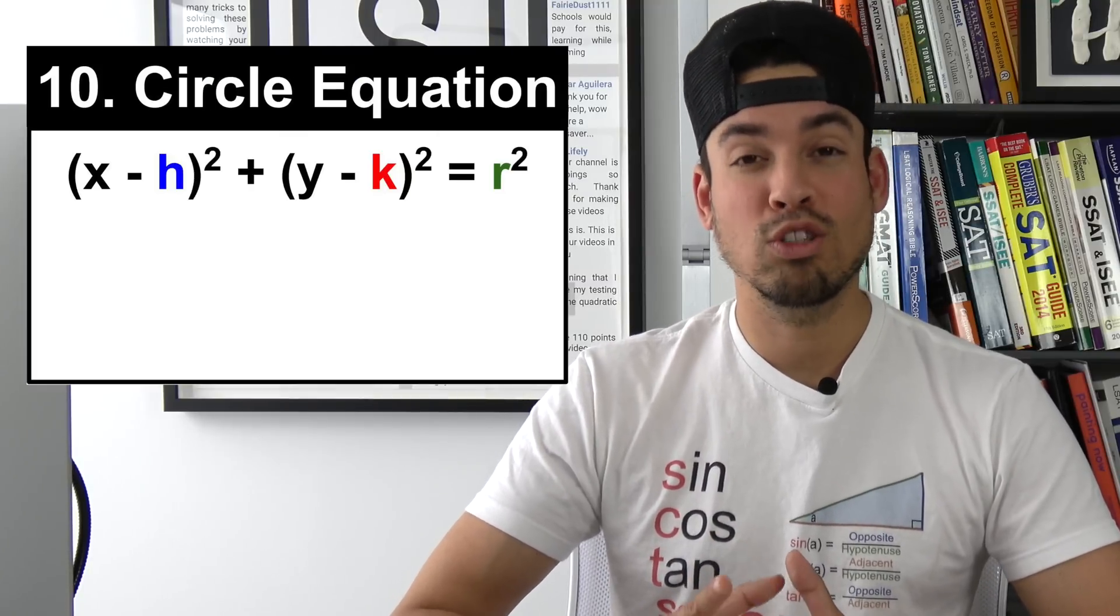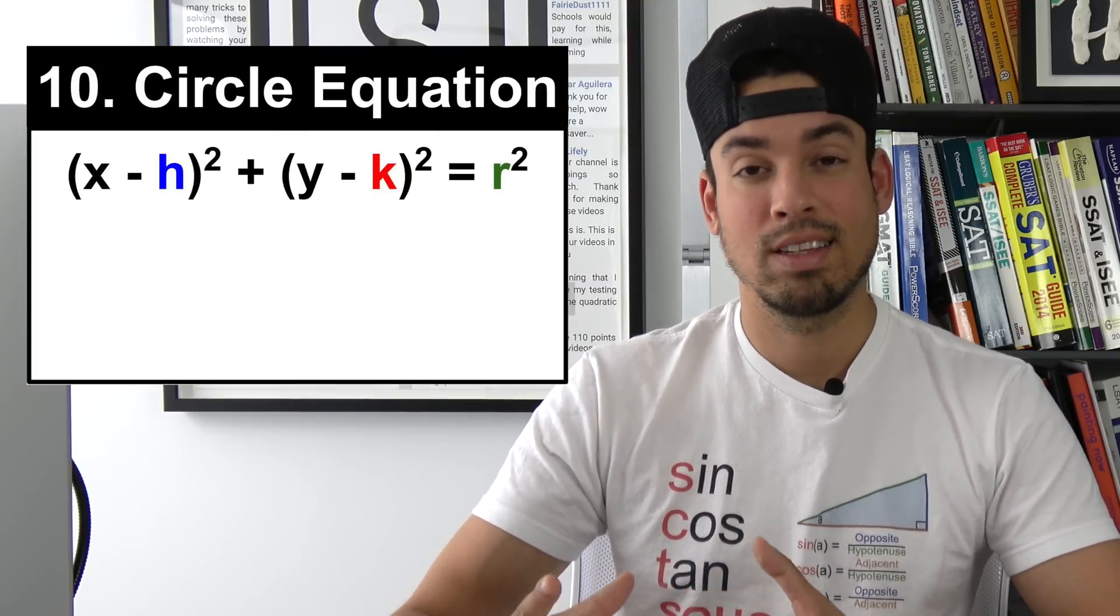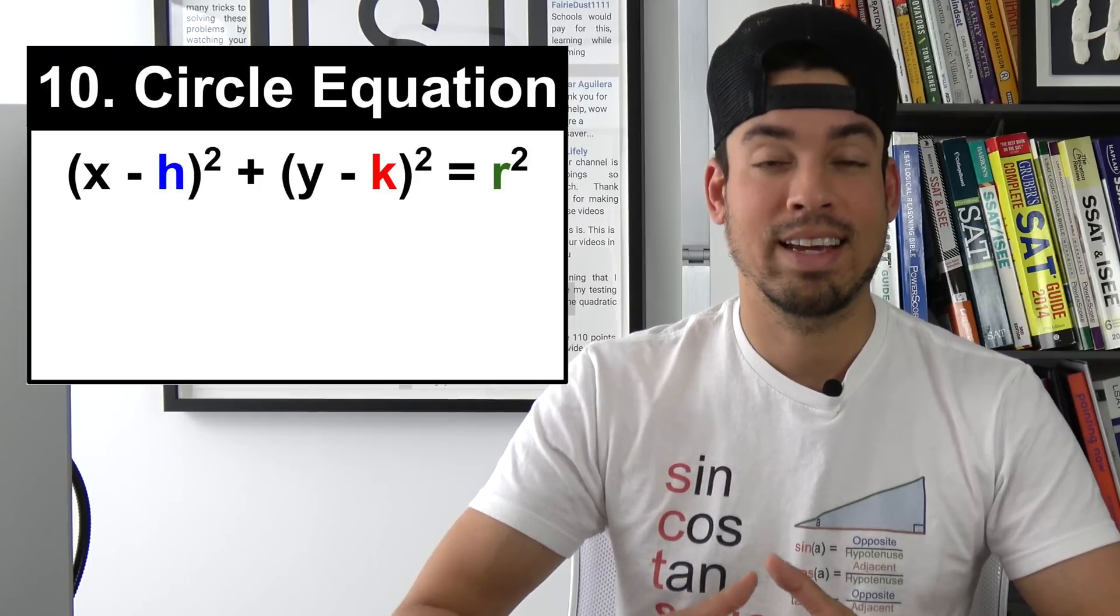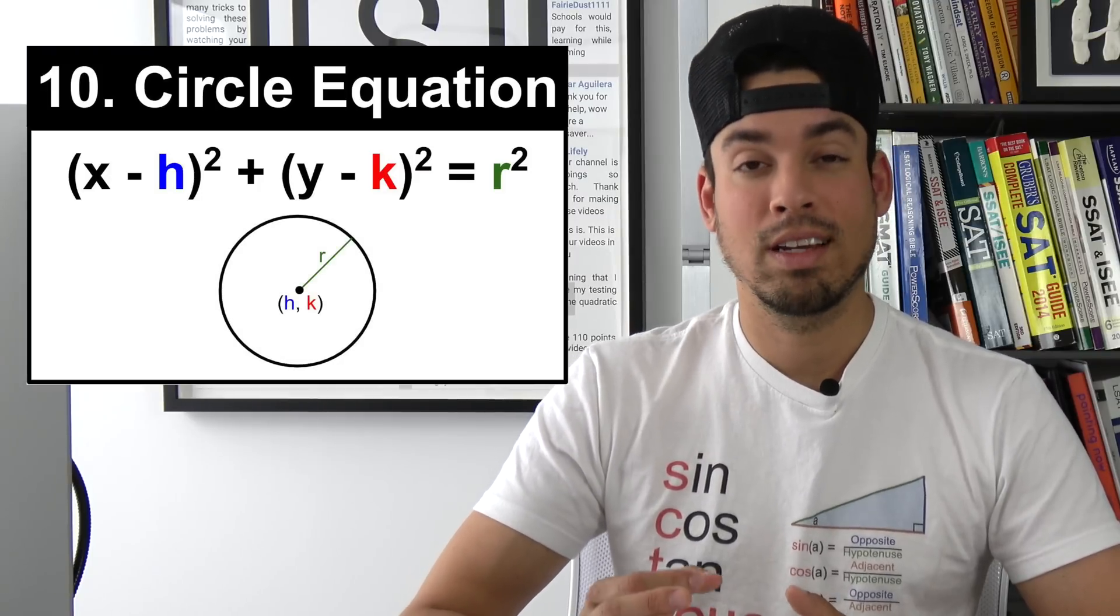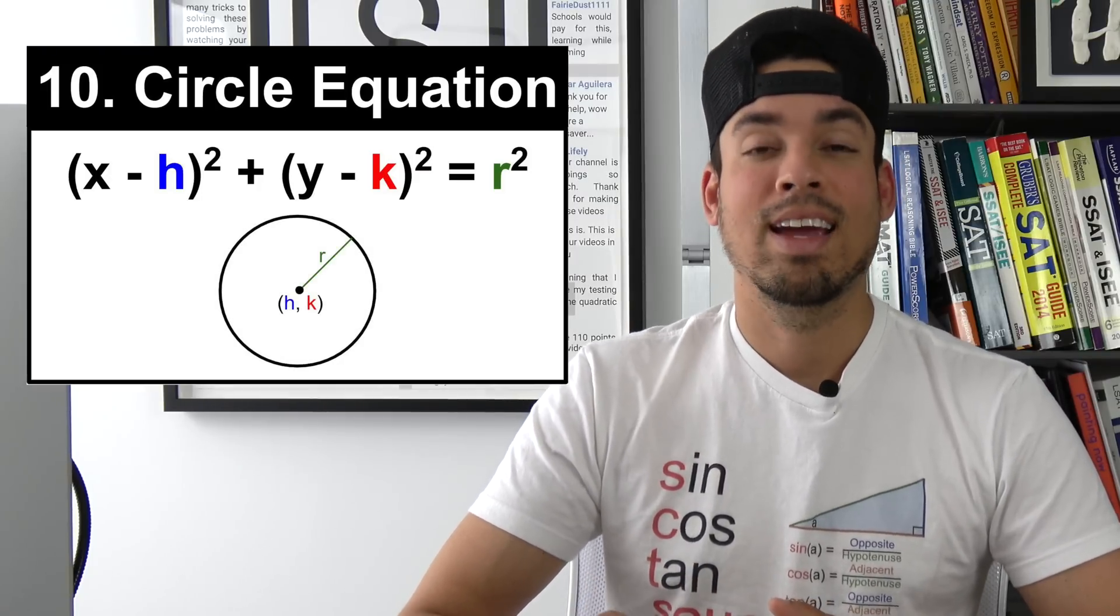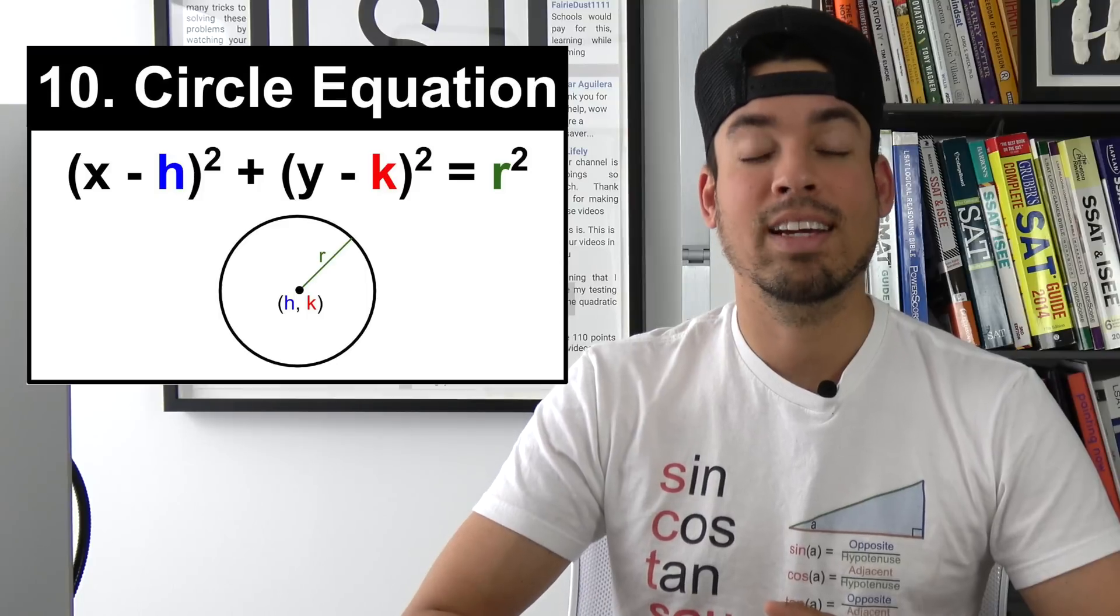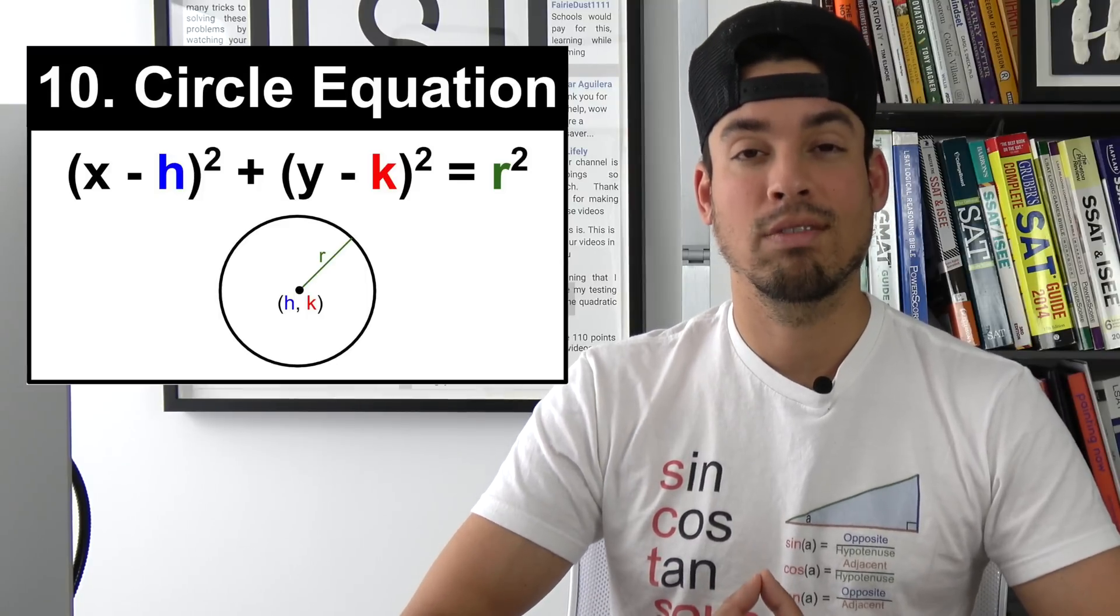Next we have the equation of a circle. They always seem to throw one or two test questions about circles and the equation in a coordinate plane on the test. So you want to know that r stands for the radius and h and k are the x and y coordinates of the center of the circle.